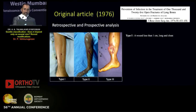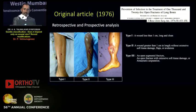In 1976, Gustilo and Anderson proposed their original article based on a retrospective and prospective analysis of 1025 open injuries. Type 1 was a wound less than one centimeter long and clean. Type 2 wounds were more than one centimeter without extensive soft tissue damage, while a type 3 wound was an open segmental fracture, open fracture with extensive soft tissue damage, or a traumatic amputation. Special categories included gunshot injuries, farm injuries, and vascular injuries requiring repair.